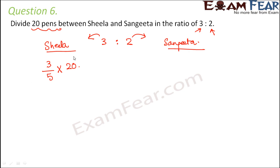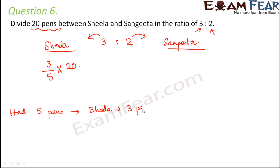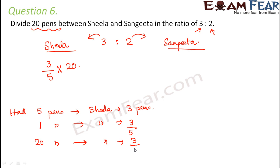The meaning of this ratio 3 is to 2 is that had the total number of pens been 5, Sheila would have got 3 pens. So in case you had 1 pen, Sheila would have got 3 divided by 5. And in case you have 20 pens, Sheila would get 3 by 5 multiplied by 20. This method is also called the unitary method, where we first find out the value for 1 unit.